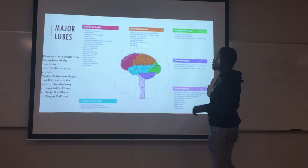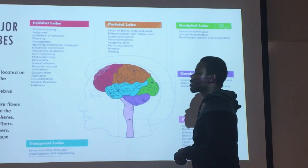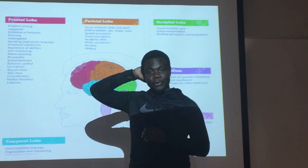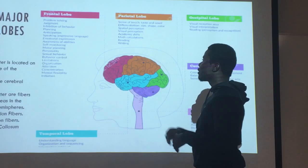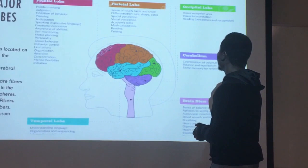The cerebrum is composed of four major lobes: the frontal lobe, which is responsible for higher-level processing, problem solving, judgment, and our behaviors; the parietal lobe, which is responsible for our senses of touch, taste, and smell; the occipital lobe, which is for vision; and the temporal lobe, which is for the understanding of language.